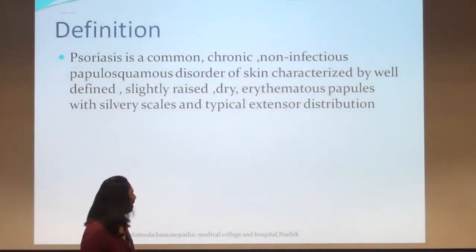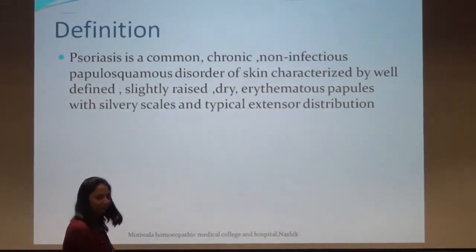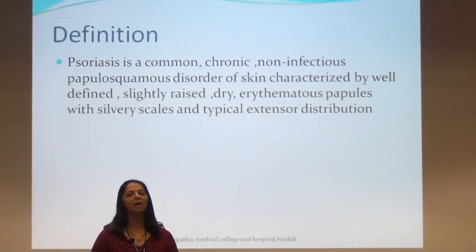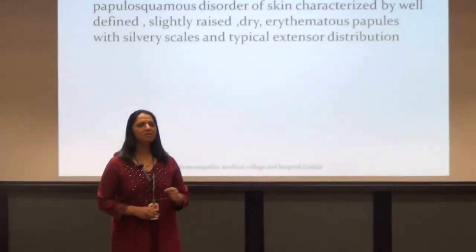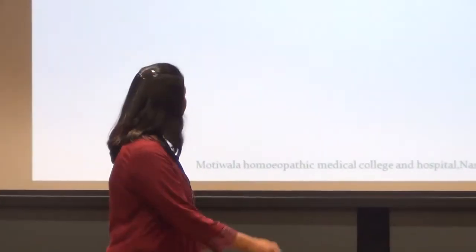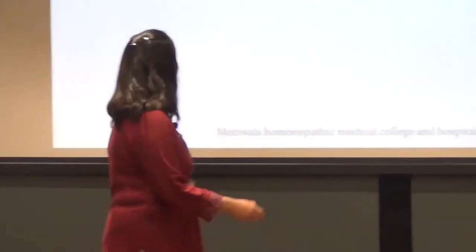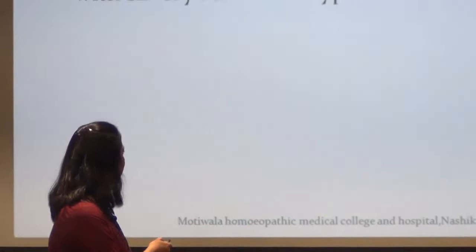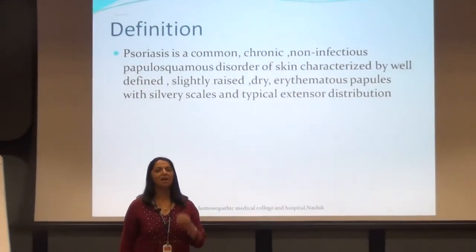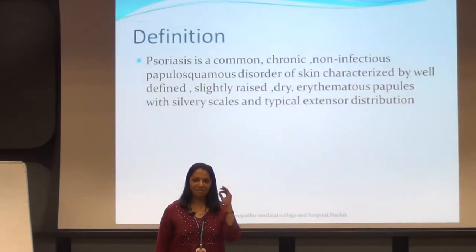Psoriasis is common because around 2 to 4 percent of people suffer from it. Prevalence is more common in temperate countries compared to tropical countries, though India now has a prevalence of 2.8 percent because of changing lifestyles. It is chronic because it runs a long course with its own exacerbations and remissions. It is non-infectious and is a papulosquamous disorder with erythematous papules, silver scaling, and typical extensor distribution.